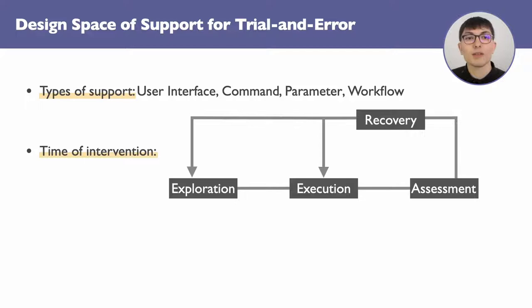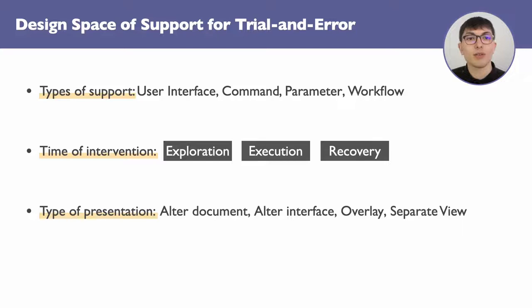In our second dimension, we differentiate the moments in which a tool can intervene. Here, we use the four phases from our model, with the exception of the assessment phase. Finally, our third dimension differentiates the ways to present the support for trial and error. From simple and obstructive modifications, such as altering the interface, to opening a separate view.